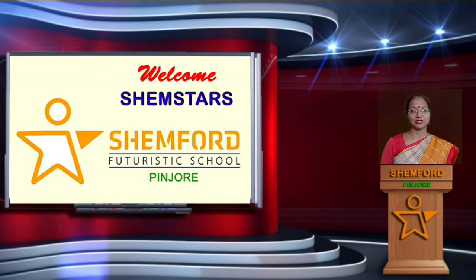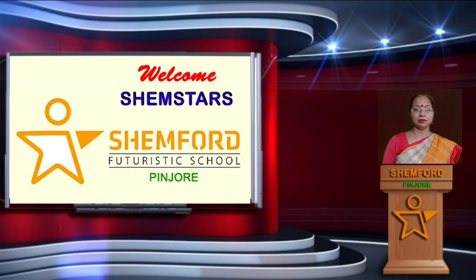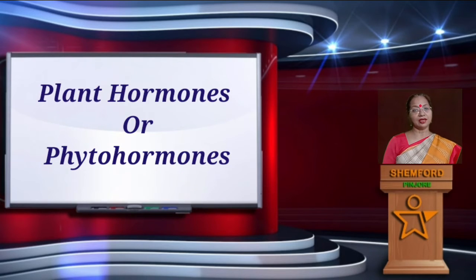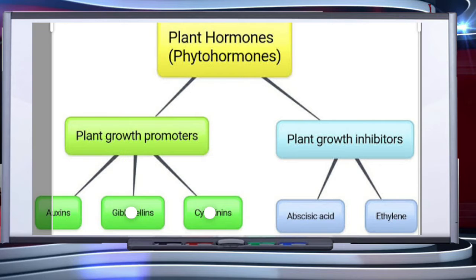Good morning, welcome. Today we are going to learn about plant hormones: their types and functions. Phytohormones or plant hormones are organic substances, other than nutrients, which in low concentration regulate plant growth and differentiation. Plant hormones may be natural or synthetic; we can also synthesize them in the laboratory.